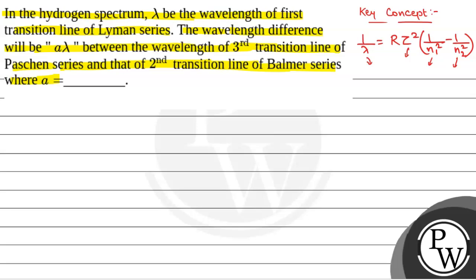For the Lyman series, N1 is equal to 1 and N2 is equal to 2, 3, 4, and so on.